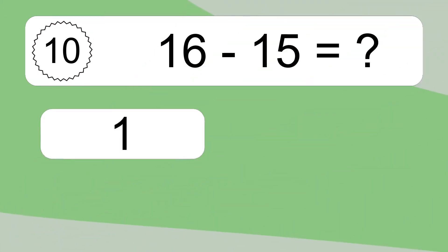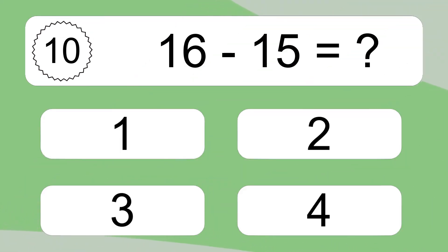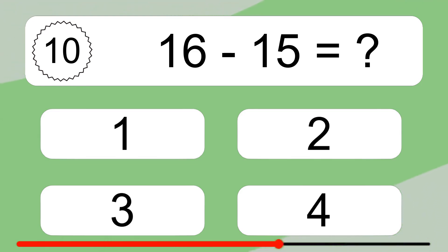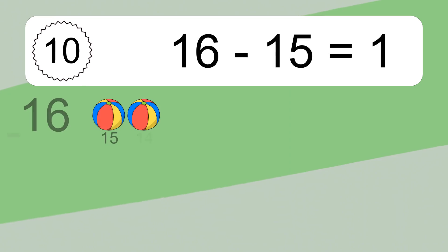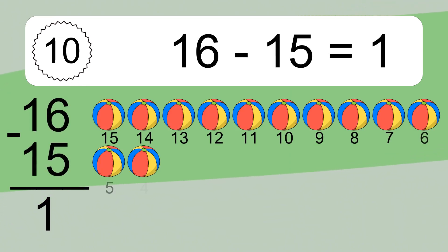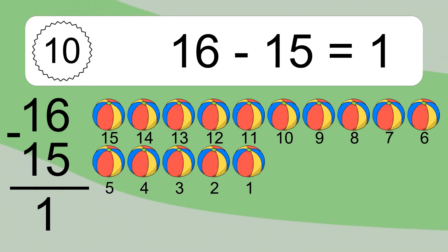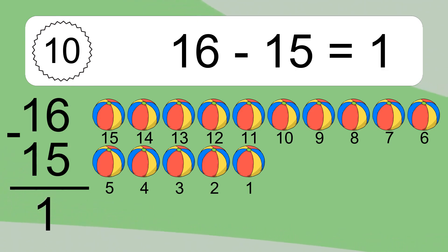16 minus 15 equals what? 16 minus 15 equals 1. Let's count it: 15, 14, 13, 12, 11, 10, 9, 8, 7, 6, 5, 4, 3, 2, 1.